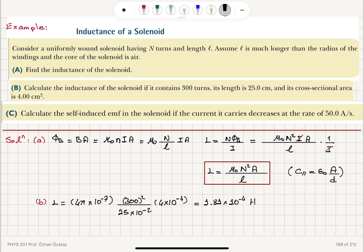So this gives us 1.81 times 10 to minus 4 Henry. Therefore, the inductance is 0.181 milli Henry. So this is our answer to part B.